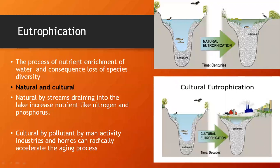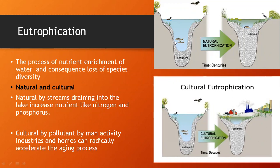In natural eutrophication, by streams draining into the lake, it increases nutrients like nitrogen and phosphorus. In natural eutrophication, whatever the nitrogen and phosphorus which comes into this water will be from the soil or from other natural sources — it can be from the manures or from fertilizers. They will come and deposit over here. Those natural phosphorus and nitrogen will come and deposit, but it will take a longer time.